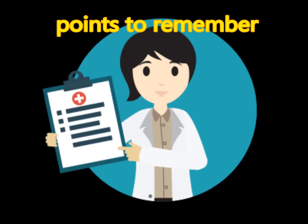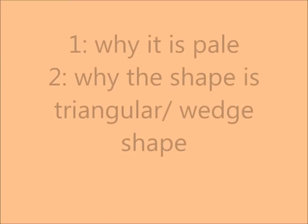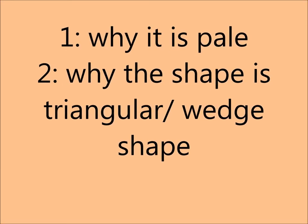Diagnosis is based on gross and microscopic features combined with the clinical scenario. The clinical scenario points towards thromboemboli of the renal vessels. Key points to remember: kidney is a solid organ; ischemia causes coagulative necrosis in solid organs; morphologically the infarct is pale in color; microscopically the outline of normal architecture is preserved; the most important criteria are eosinophilia and loss of nuclei.